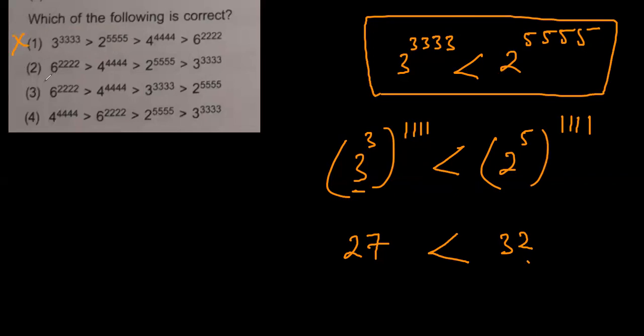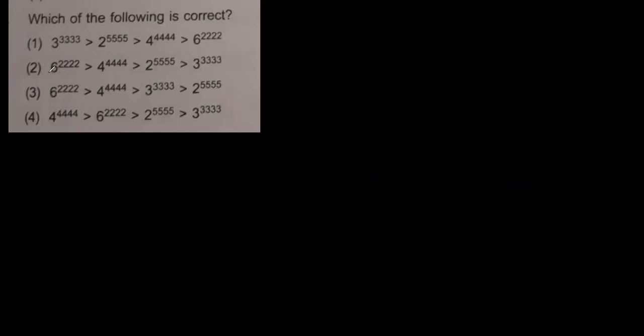Similarly, we can check the second one. You can write six squared to power 1111 is greater than four to power four to power 1111. What the statement is actually saying is 36 to power 1111—this is four to power four, which would be 16 squared, which is 16 times 16, equals 256.